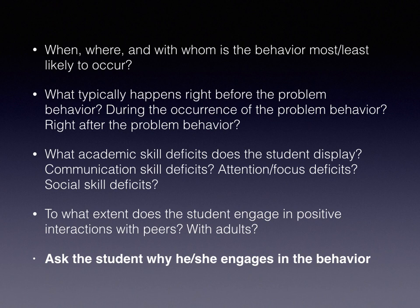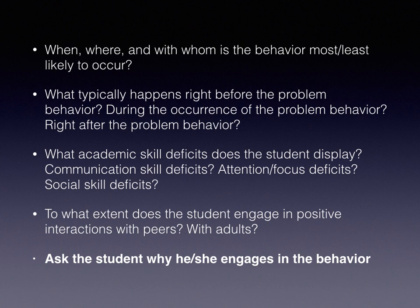Typically there is a one-to-one correspondence with problem behavior — a student engages in problem behavior and always gets attention from a teacher or a peer. Albeit negative, it is still attention. When a student has no attention, that is a basic human need. Wanting attention is not a problem behavior; it's a basic human need. Thinking of Maslow's hierarchy of needs, the second level is sense of belonging, love, and connection with other people.